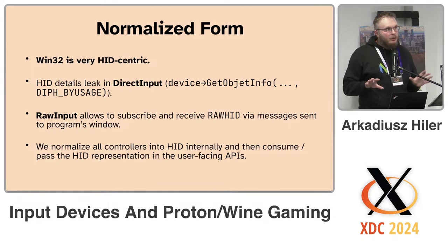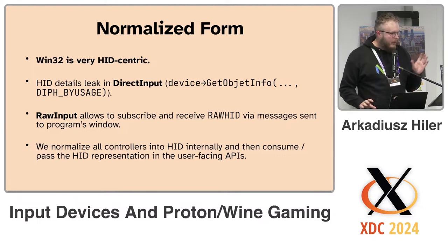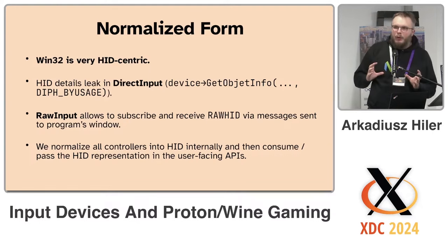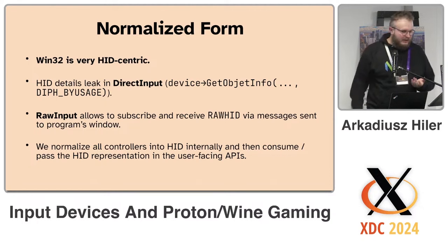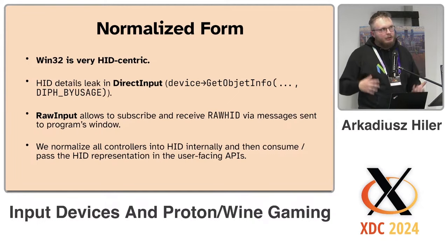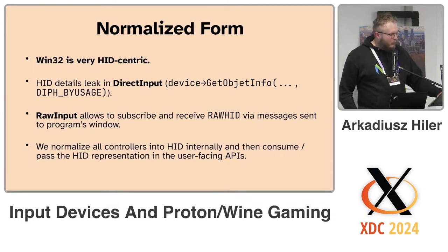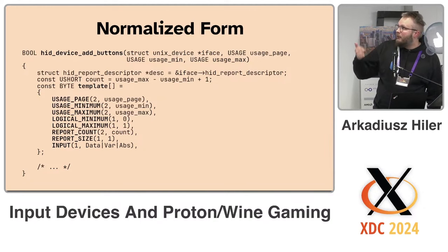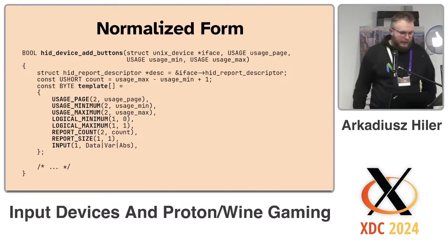Windows is pretty HID-centric — you can see it everywhere, it leaks implementation details everywhere. If you look at DirectInput or Raw Input, you can basically subscribe to raw HID messages on your window, which is not the case on Linux because everything gets parsed. So we normalize everything into HID form, and that's what gets passed internally inside Proton. This is how we construct those descriptors — it's basically a template where we say 'add that many buttons' and then get a fake device out of it.